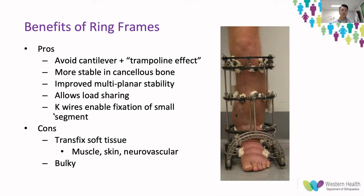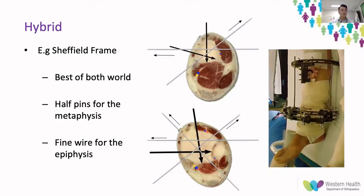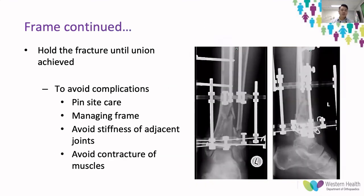In summary, the benefits of a ring frame include: avoiding the cantilever effect with the trampoline effect, more stable fixation in cancellous bone, improved multi-planar stability, load sharing and weight bearing, and the ability to thread K-wires directly through tibial plafond fracture sites. The drawbacks are that wires can transfix soft tissue, muscle, and skin, and care must be taken to avoid neurovascular structures. The frame is also very bulky, which is where a hybrid frame — combining half pins in the metaphysis with fine wires at the fracture site — can offer the best of both systems. The frame is maintained until union is achieved.